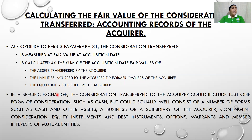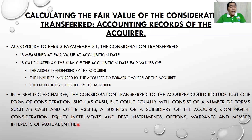In a specific exchange, the consideration transferred to the acquiree could include just one form — for example, purely cash. Company A as acquirer could acquire Company B by purely cash. But it could equally consist of multiple forms of assets such as cash and other assets, property, plant and equipment, a business or subsidiary, contingent consideration, equity instruments, debt instruments, options, warrants, and member interests.